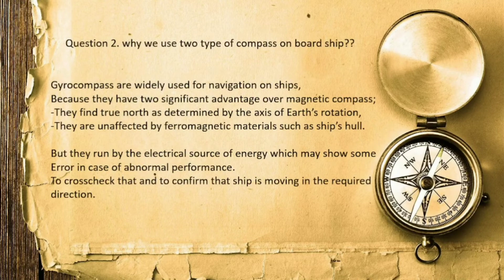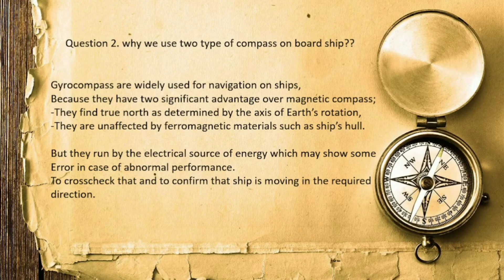Why do we use two types of compass on the ship? We use both the gyro compass and the magnetic compass. The gyro compass indicates true north based on the Earth's axis of rotation. It is unaffected by ferromagnetic materials, and its error rate is very low and almost negligible, as there are no deflections from magnetic materials. Therefore, we use the gyro compass as the primary compass and follow its direction more than the magnetic compass.